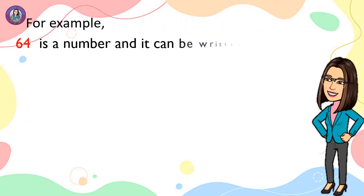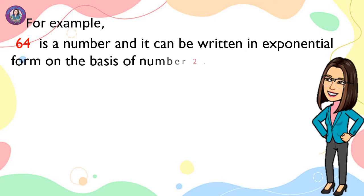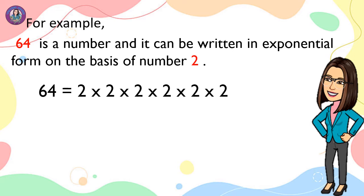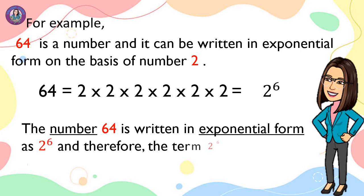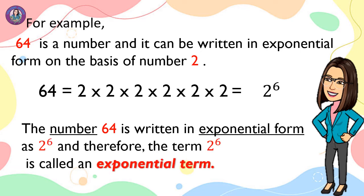For example, 64 is a number and it can be written in exponential form on the basis of number 2. 64 equals 2 times 2 times 2 times 2 times 2 times 2, that is, 2 raised to the 6th power. The number 64 is written in exponential form as 2 to the 6th power, and therefore the term 2 to the 6th power is called an exponential term.